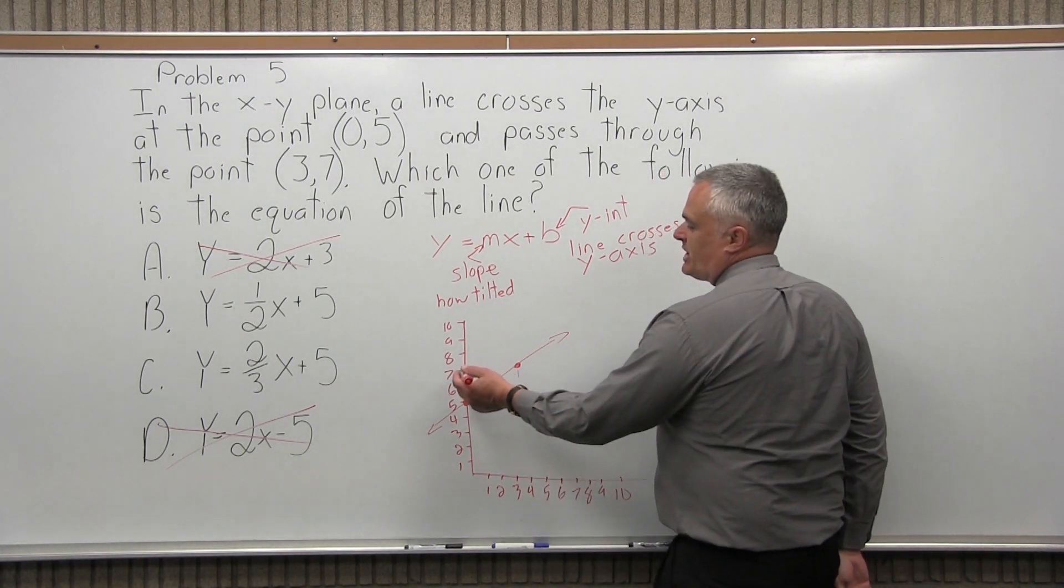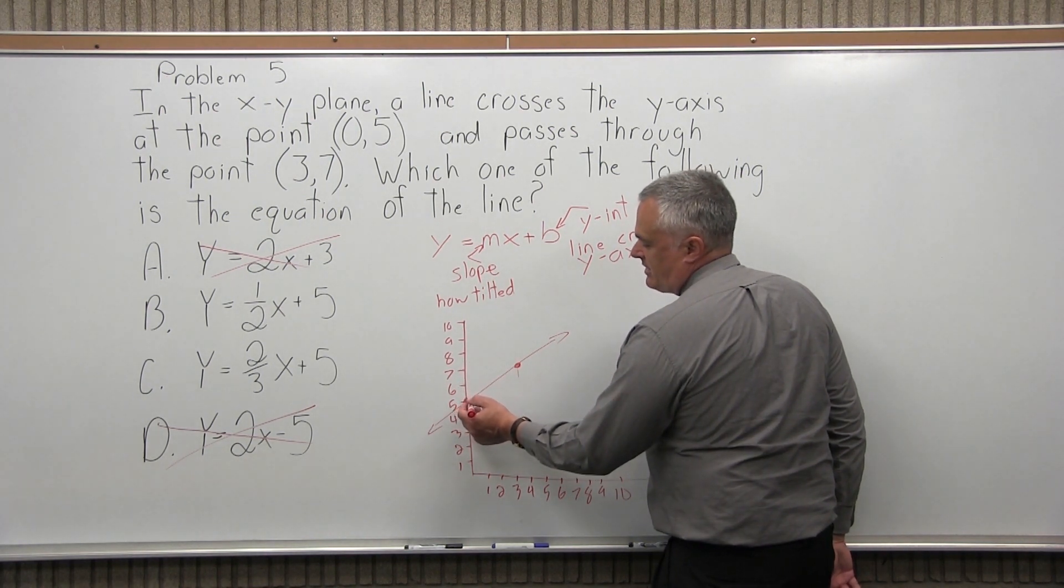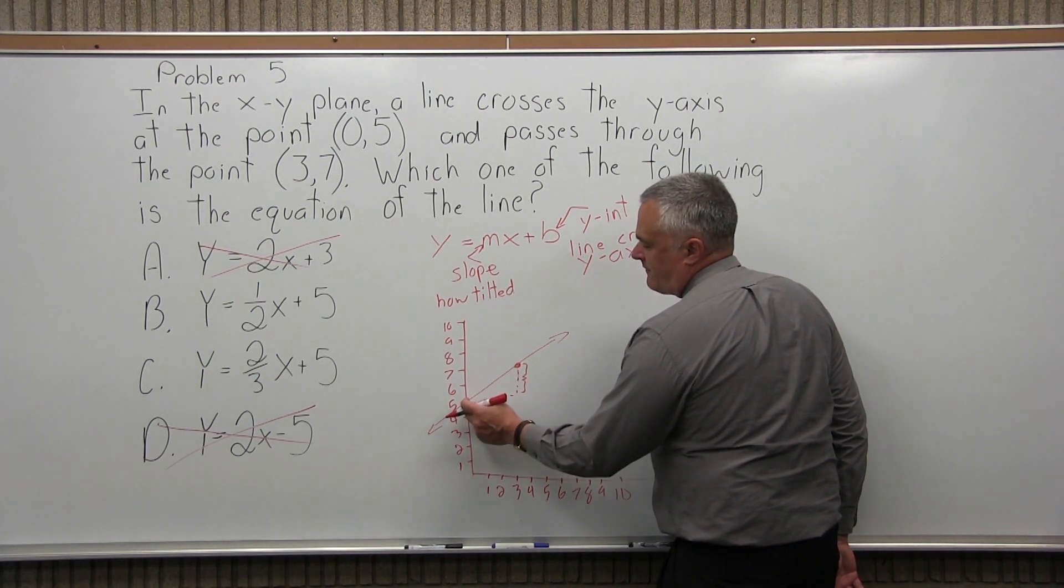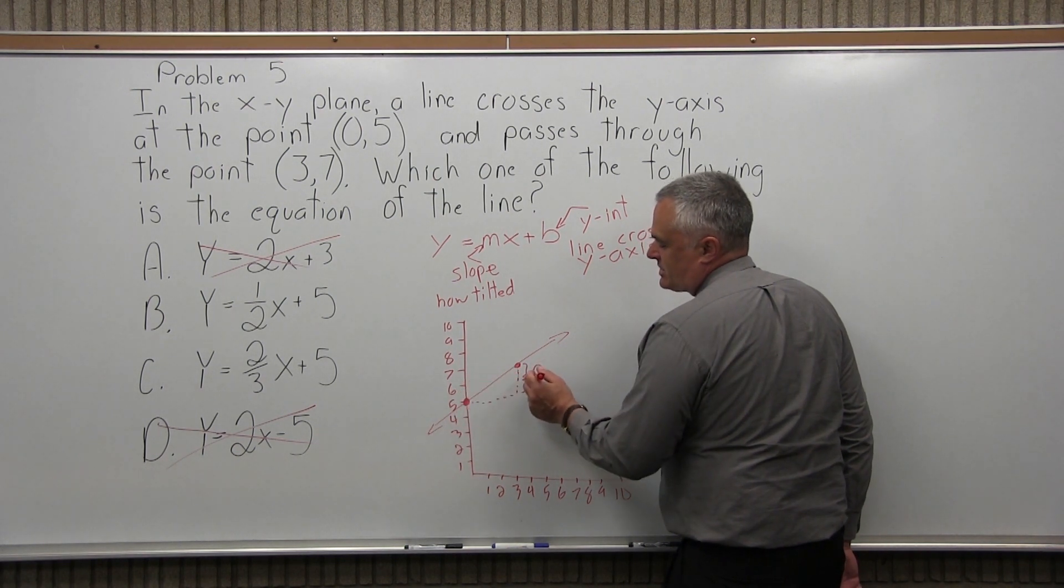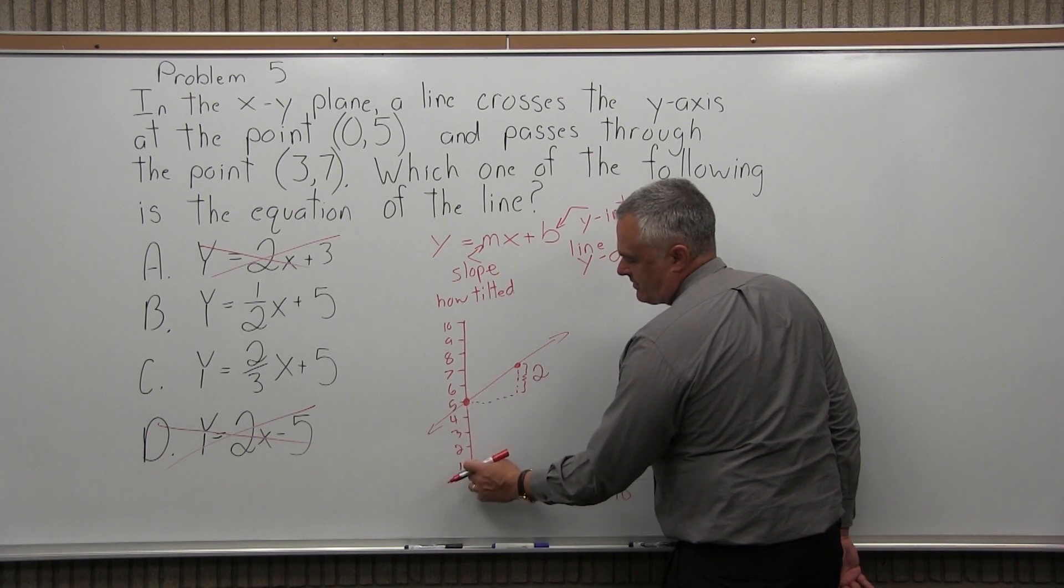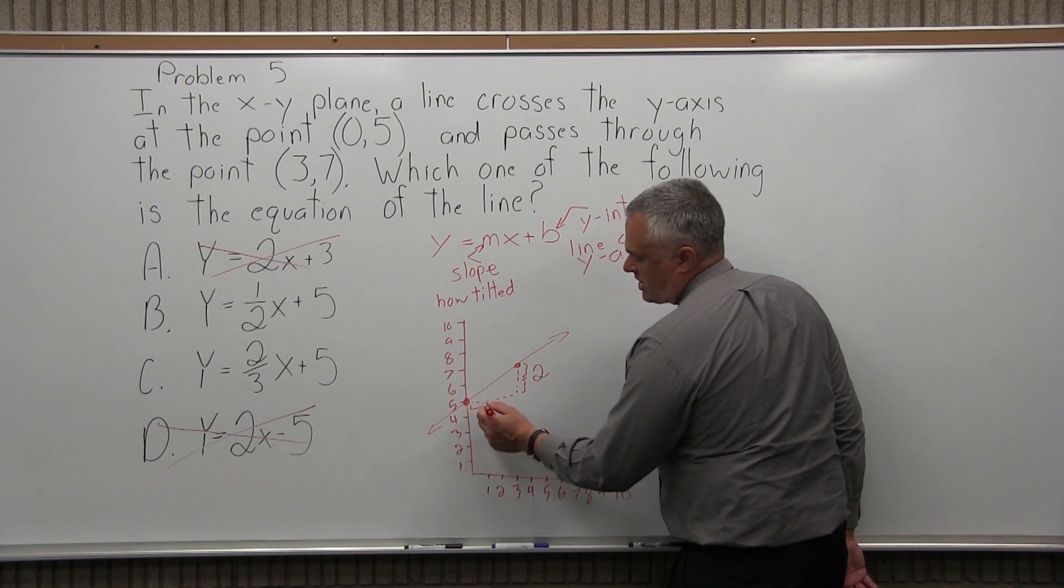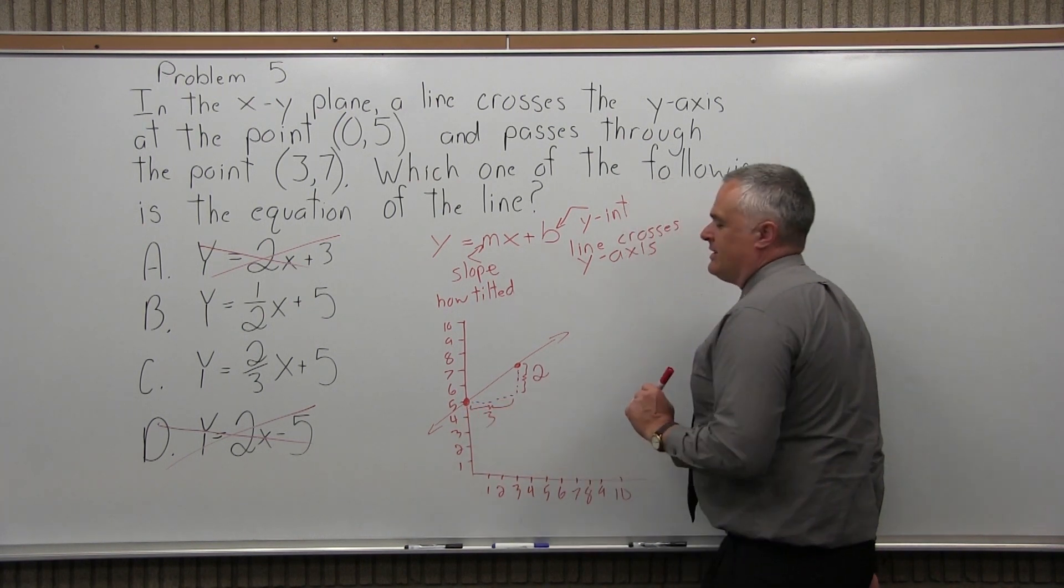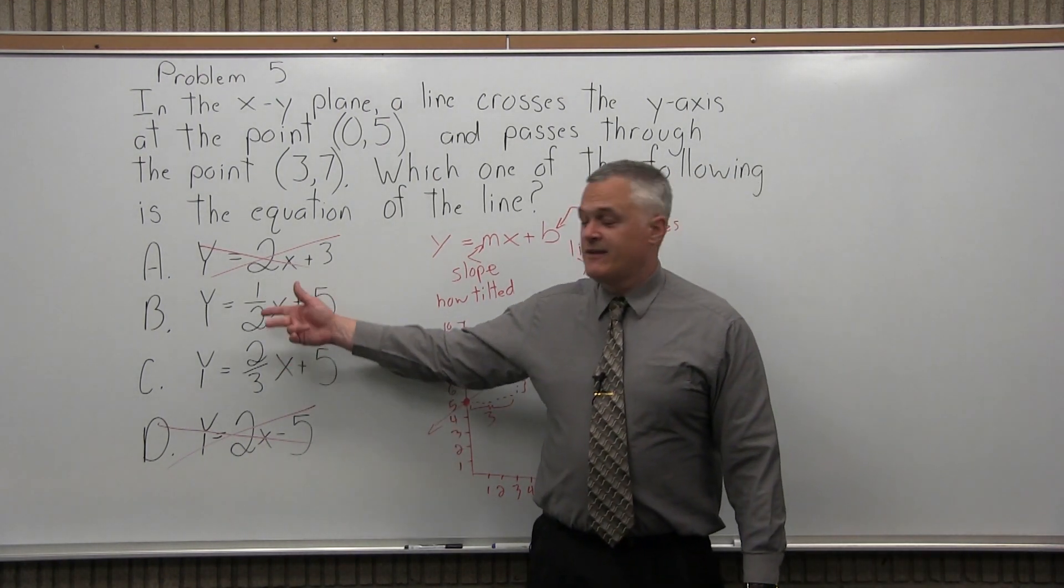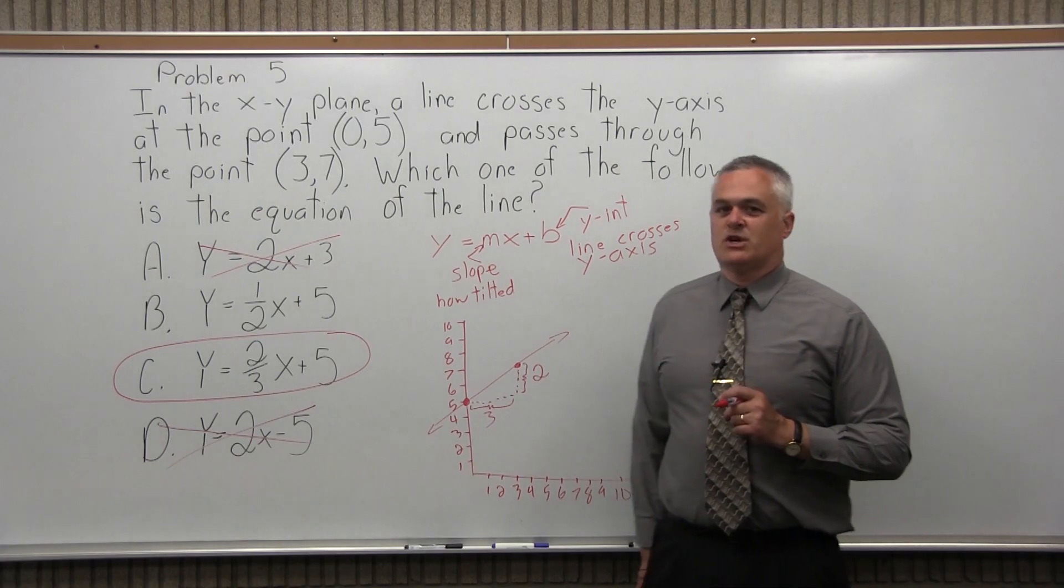Well, slope is your change in height over the change in distance across. So to get from this point here to the next point, I'm going from a height of 5 to a height of 7. So that's a change in height of 2. And then to go from this point here, which has an x of 0, to the other point, which has an x of 3, I'm coming across an amount of 3. So it goes up 2 over 3. So here's what relates to 2 and 3. The 1/2 doesn't do it. So the answer to problem 5 is option C.